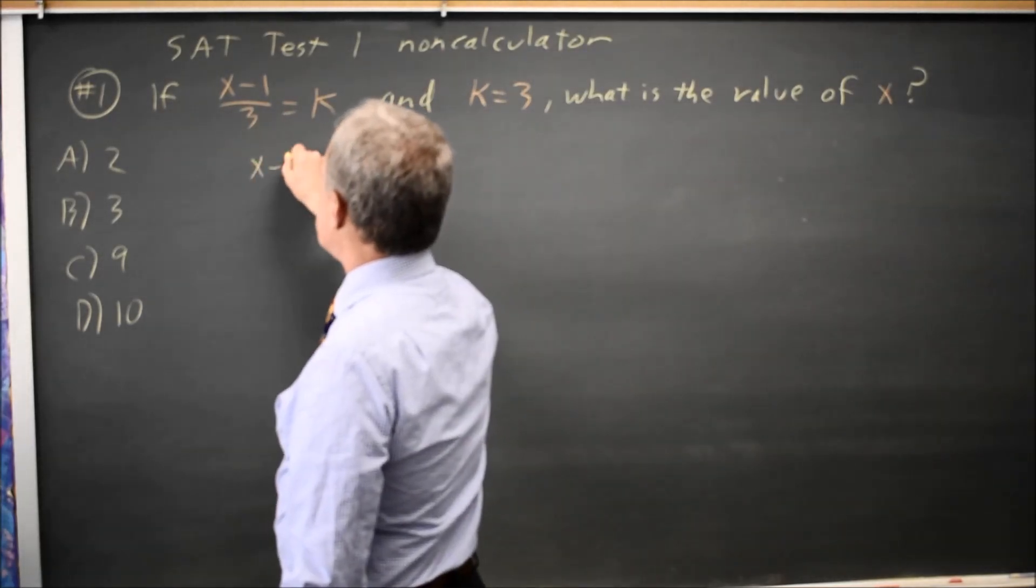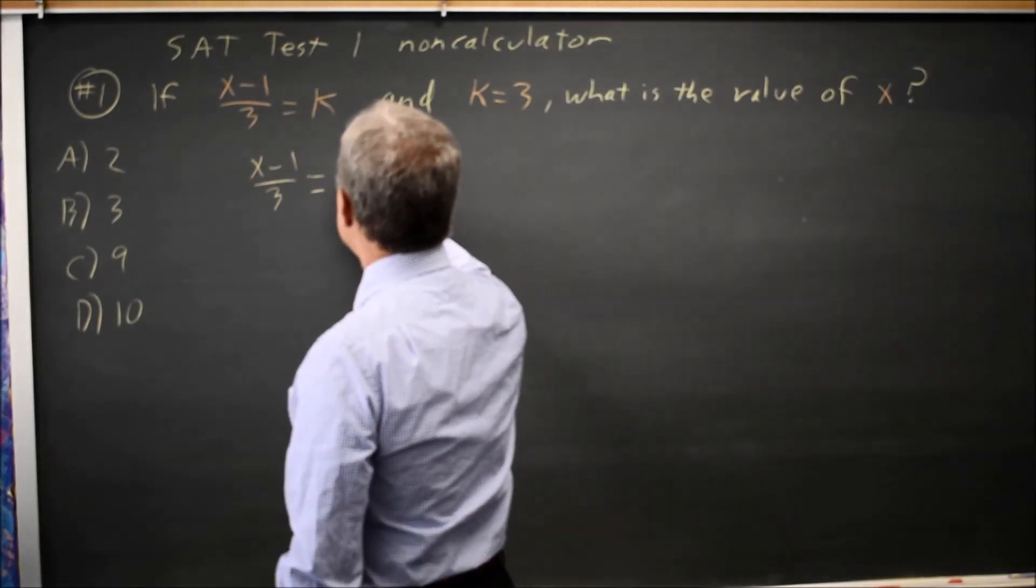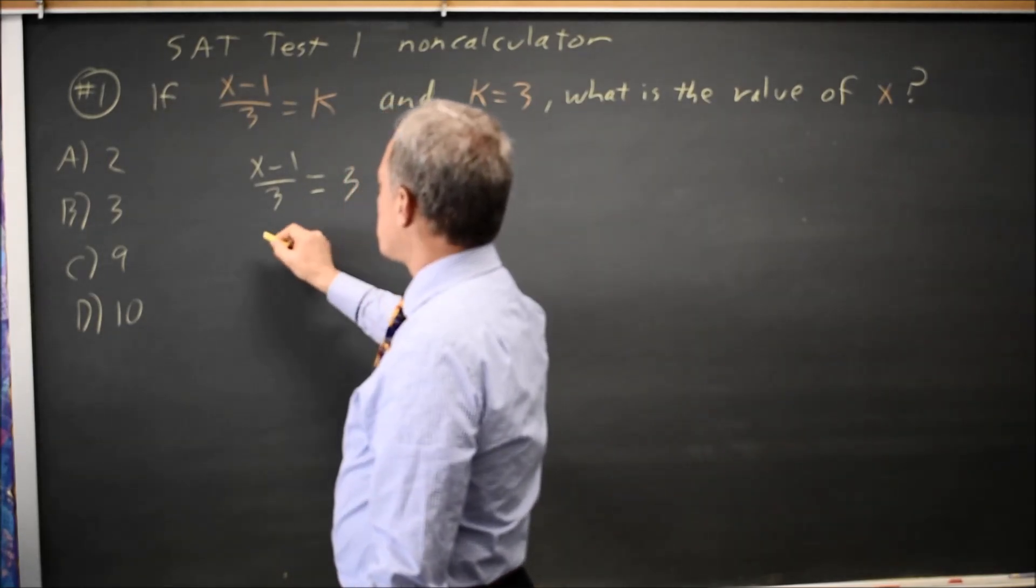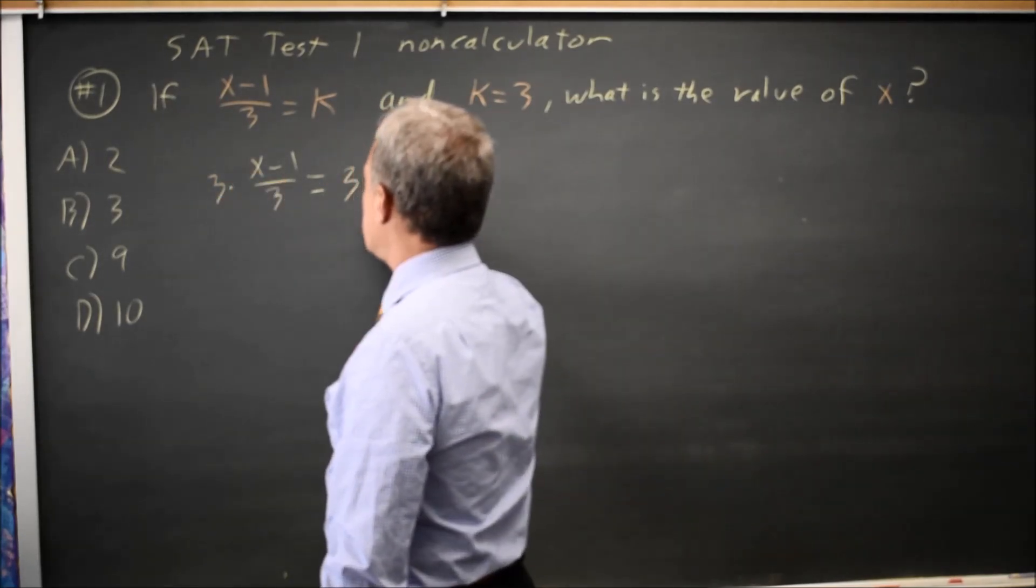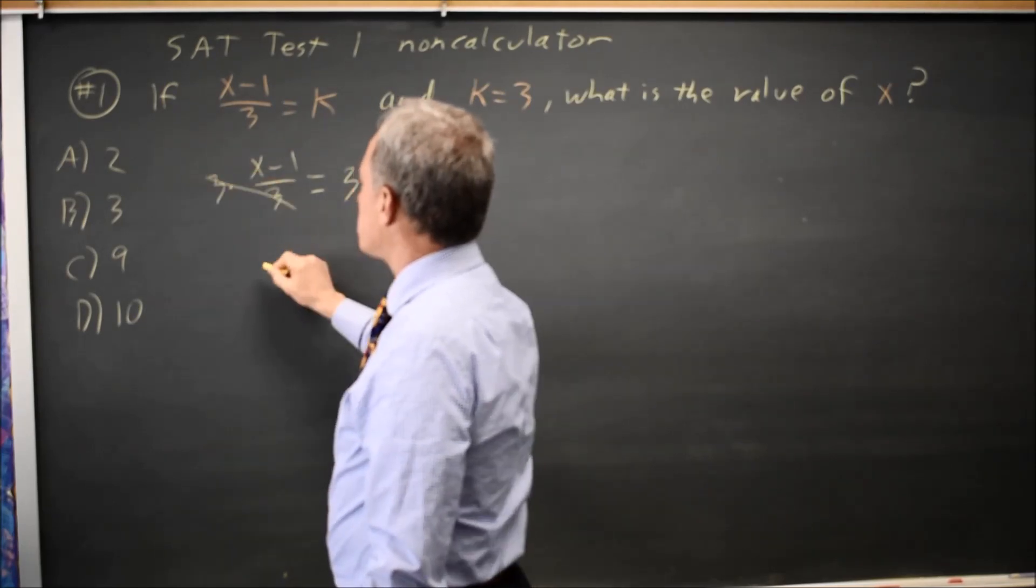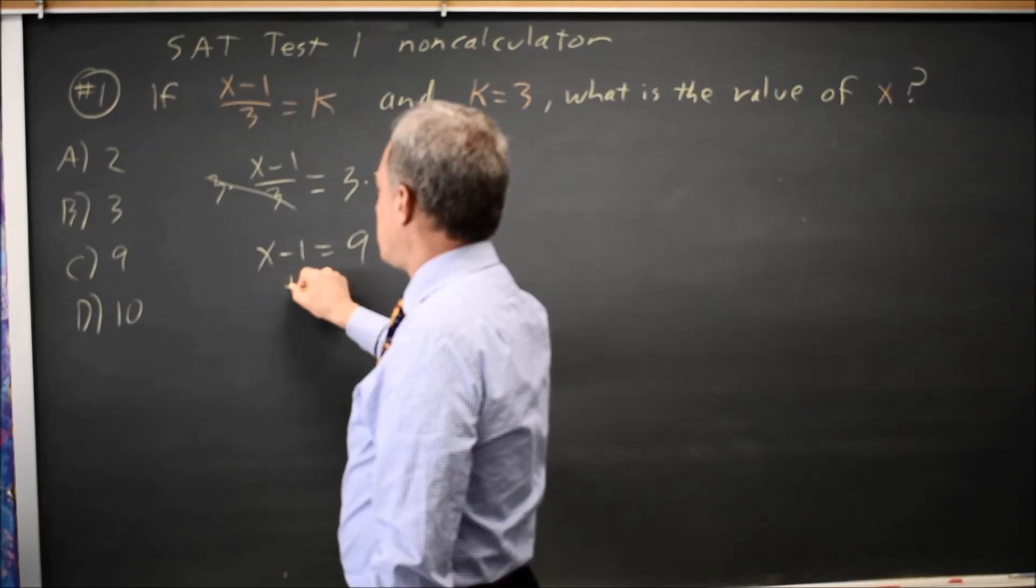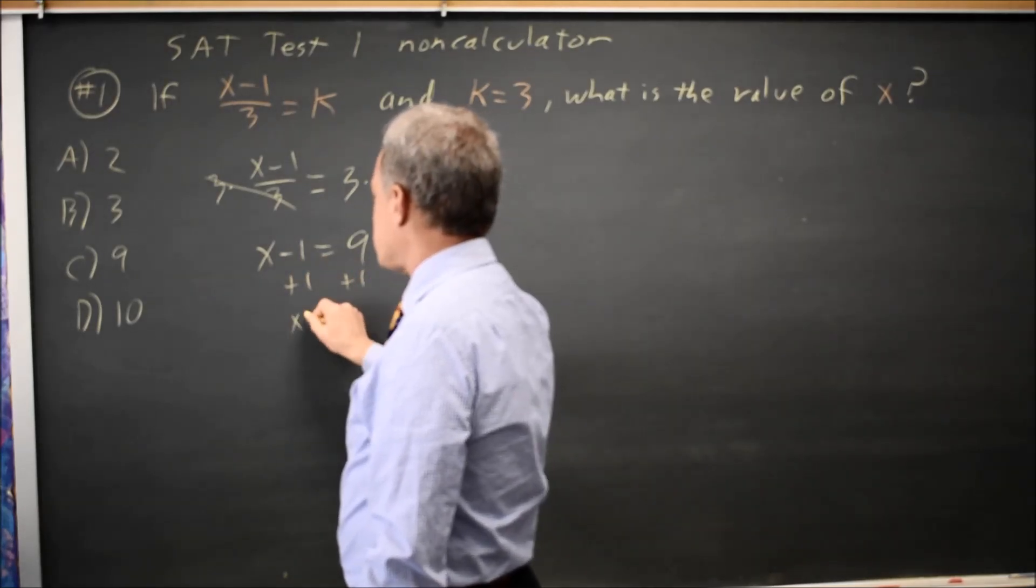I have x minus 1 over 3 equals k, and k is 3, so x minus 1 over 3 equals 3. I can either cross-multiply, multiply both sides by 3, which gives me 3 over 3 is 1, x minus 1 on the left equals 3 times 3 is 9, add 1 to both sides, and I get x equals 10.